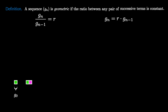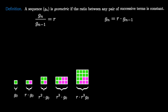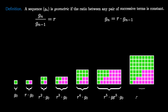Pictorially we take g_0 and we create r copies of g_0 to get the next term. Then we create r copies of this to get our next term, so that we have r times r times g_0, which means we have r squared times g_0. We again take r copies to get our next term, giving r cubed times g_0. Continuing, we get r to the fourth, r to the fifth, and r to the sixth times g_0. Thinking about this process shows us that g_n is equal to the first term g_0 times r to the n.